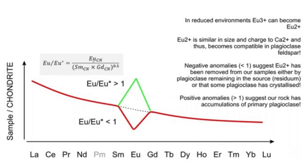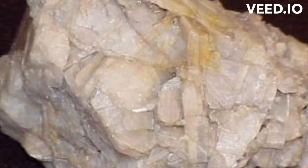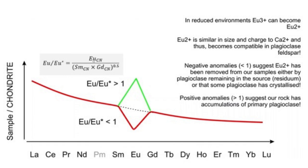In reduced or alkaline conditions, the europium 3+ is unstable, therefore will be converted into the most stable europium 2+. However, this europium 2+ is similar in size and charge to the calcium 2+ in the plagioclase, therefore this europium 2+ will become compatible or partitioned readily into the plagioclase feldspar. Depletion or enrichment is generally attributed to europium's tendency to be incorporated readily into plagioclase preferentially over other minerals.